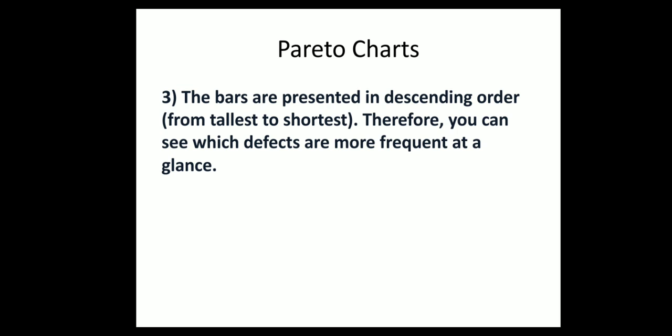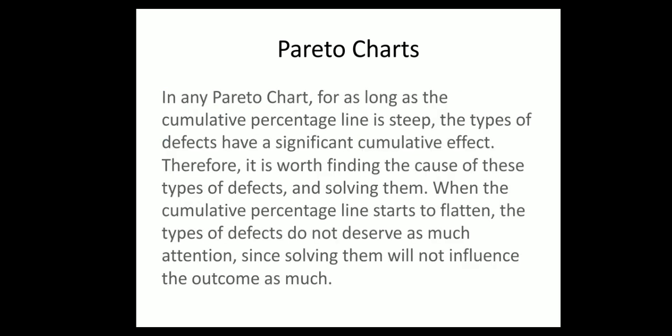The bars are presented in descending order, from tallest to shortest. Therefore, you can see which defects are more frequent at a glance. In any pareto chart, for as long as the cumulative percentage line is steep, the types of defects have a significant cumulative effect.